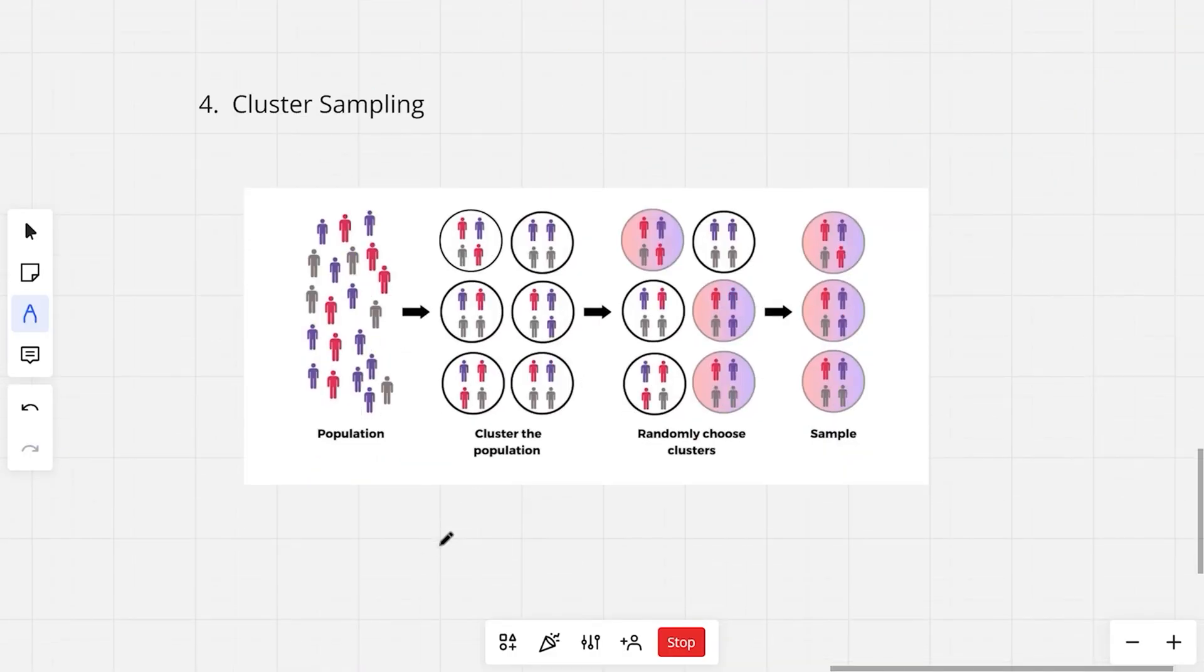The next technique is cluster sampling. Cluster sampling is when you divide a large group into smaller groups called clusters and then randomly pick a few clusters to study. Instead of studying everyone, you are going to focus on just the selected clusters which is going to make data collection faster and easier.